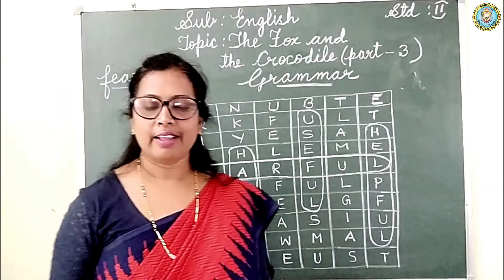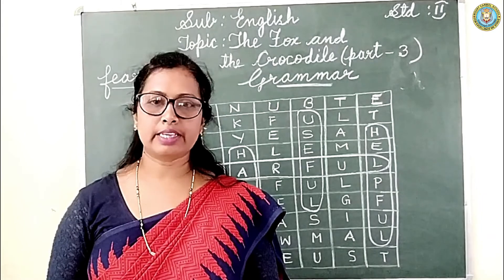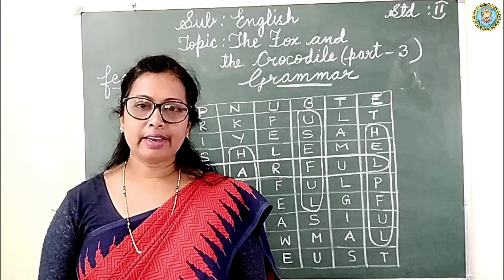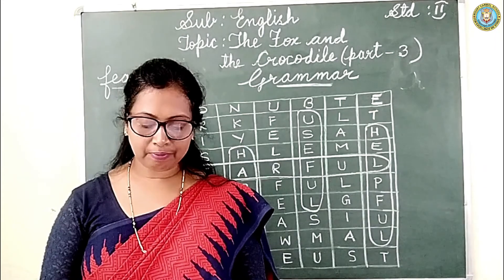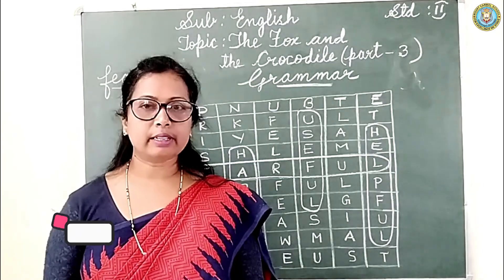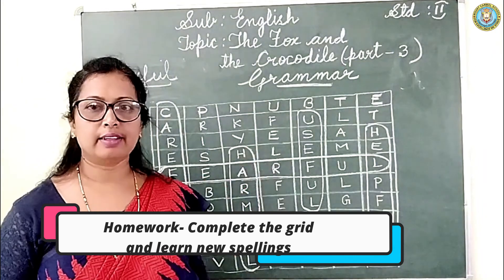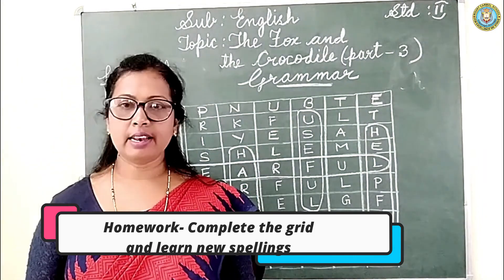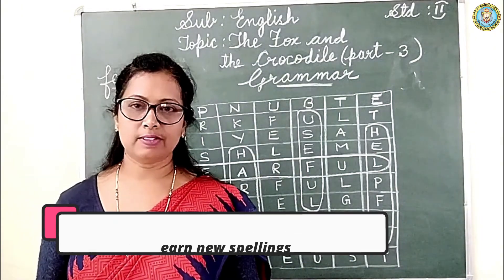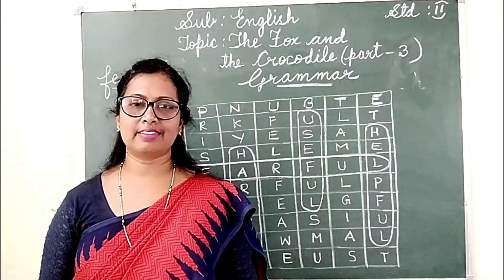These are the adjectives — words formed by adding F-U-L are also called adjectives. Now take down your homework. In page number 36 there is a grid. You have to complete it in the textbook and learn the spelling of these words. Thank you, see you in the next class. Bye!